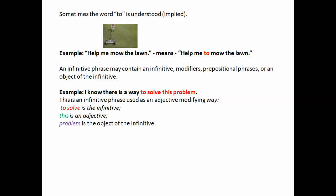An infinitive phrase may contain an infinitive, modifiers, prepositional phrases, or an object of the infinitive. For example, I know there is a way to solve this problem. This is an infinitive phrase that is used as an adjective modifying way. It tells you what kind of way or which way. To solve is the infinitive, this is an adjective, and problem is the object of the infinitive. Now because these verbal phrases have a verb, always have a verb, they can also have an object. You don't call it a direct object, you call it the object of the infinitive or the object of the gerund.